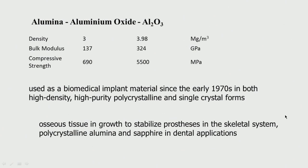Let us look at each one of these biomaterials. The oxide: alumina — aluminium oxide, Al2O3 — has a density of 3, with a bulk modulus and compressive strength. It has been used as a biomedical material since the early 1930s, in both high density, high purity, polycrystalline and single crystal forms. It is used in osseous tissue ingrowth to stabilize prostheses in the skeletal system, and in polycrystalline alumina and sapphire in dental applications.